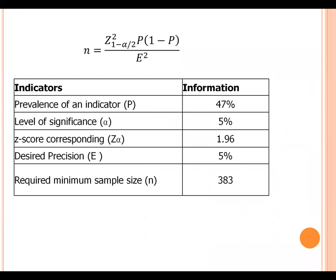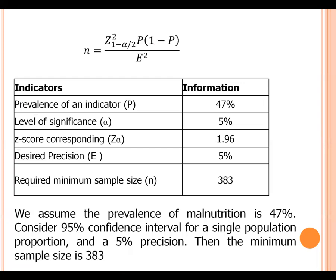Now we can write: We assume that the prevalence of malnutrition is 47 percent. Consider 95 percent confidence interval for a single population proportion and 5 percent precision. Then, the minimum sample size is 383.